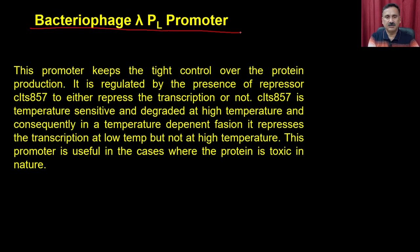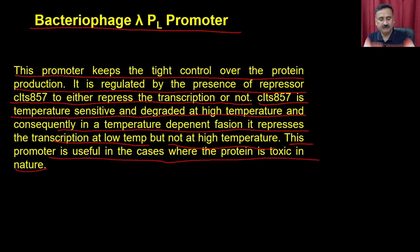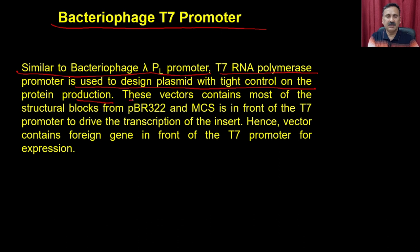Then we have the bacteriophage lambda promoters. This promoter keeps tight control over protein production. It is regulated by the presence of repressor cI857, which either represses transcription or not. cI857 is temperature-sensitive and is degraded at high temperature; consequently in a temperature-dependent fashion it represses transcription at low temperature but not at high temperature. This promoter is useful in cases where the protein is toxic in nature. Then we also have the bacteriophage T7 promoter, which is similar to the bacteriophage PL promoter and is used to design plasmids with tight control on protein production. These vectors contain most of the structural blocks from pBRT22 and the MCS in front of the T7 promoter to drive transcription of the insert.